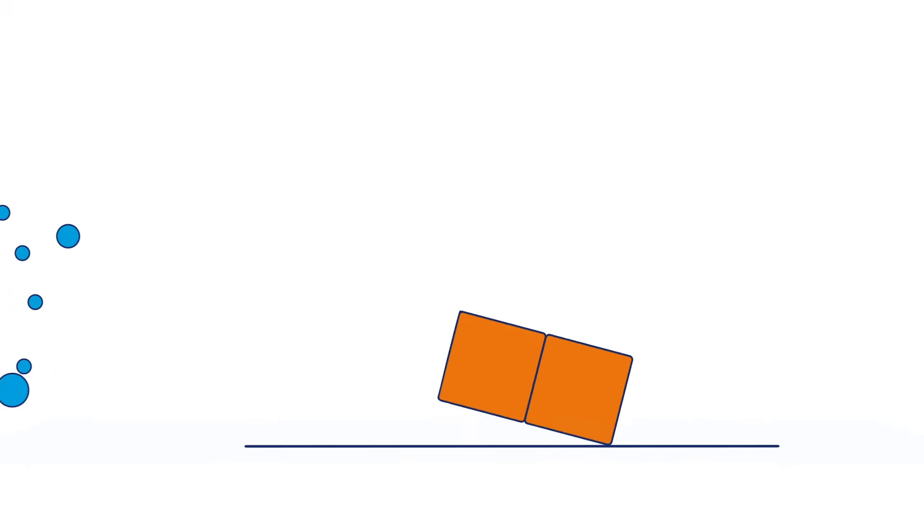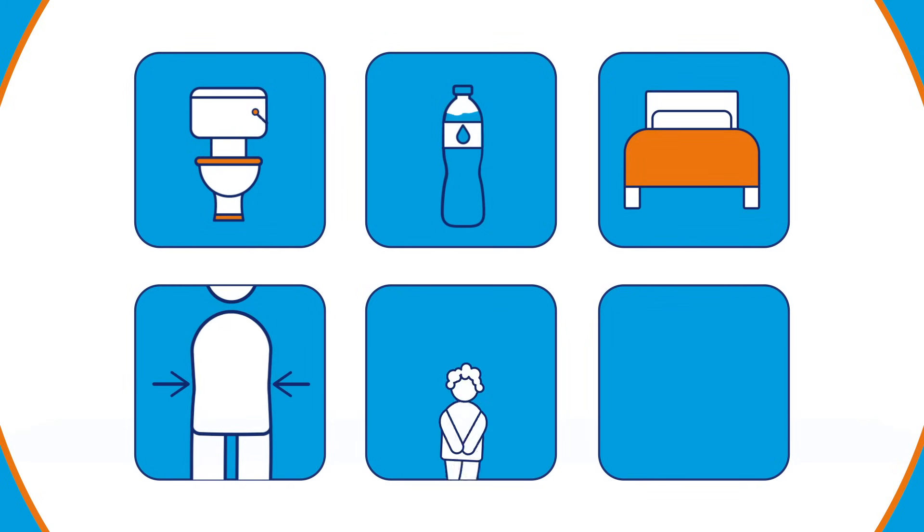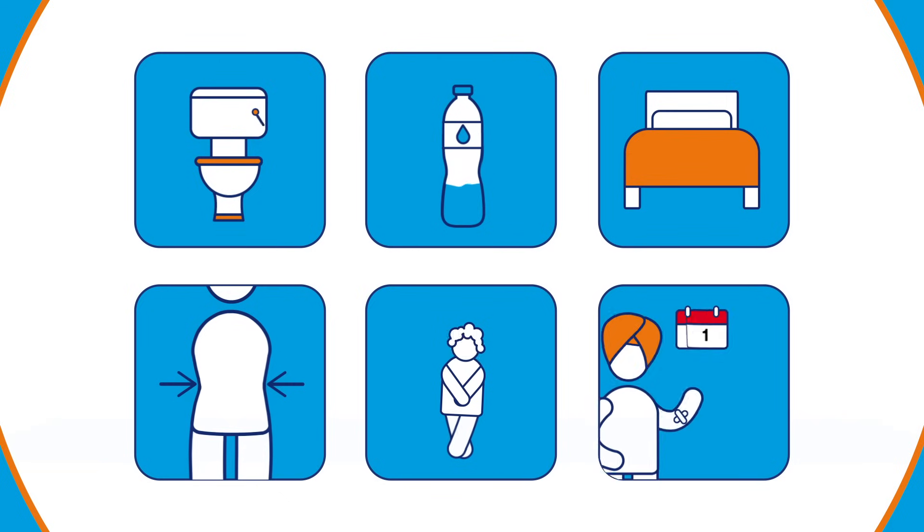To begin with, it leads to diabetes symptoms like having to wee a lot, being incredibly thirsty and feeling very tired. You may also lose weight, get infections like thrush or suffer from slow healing wounds.